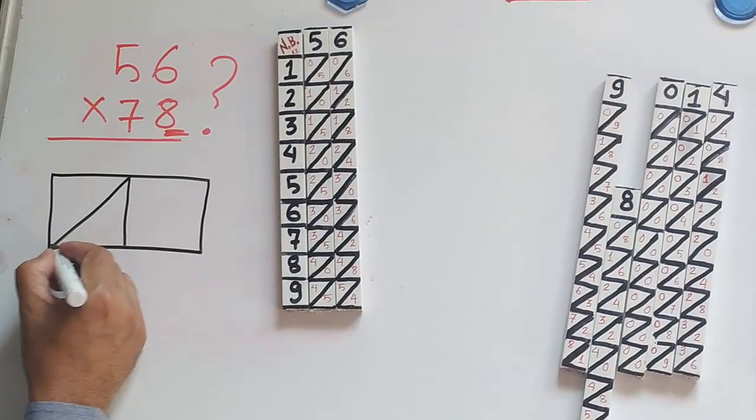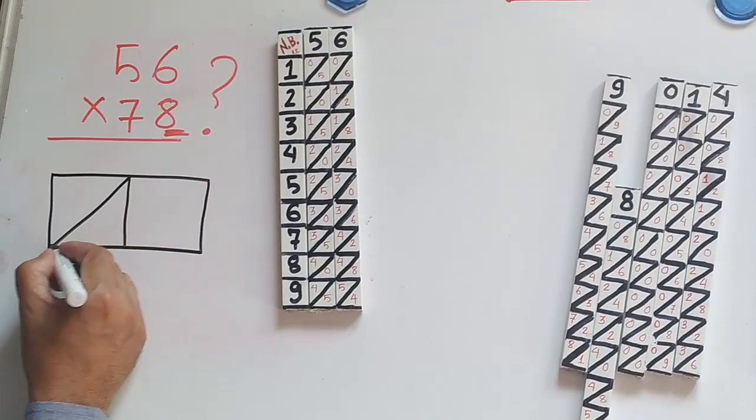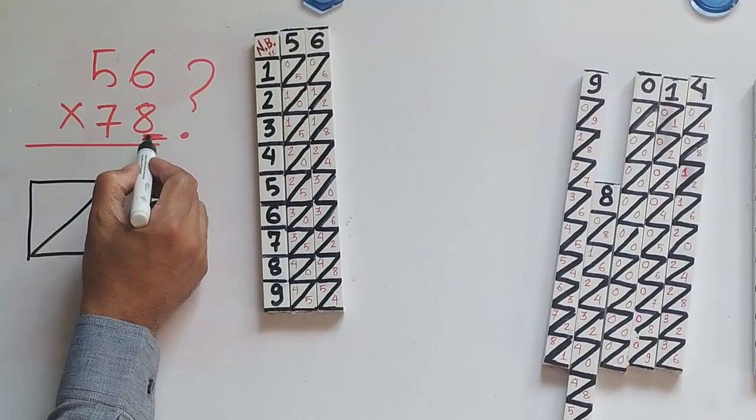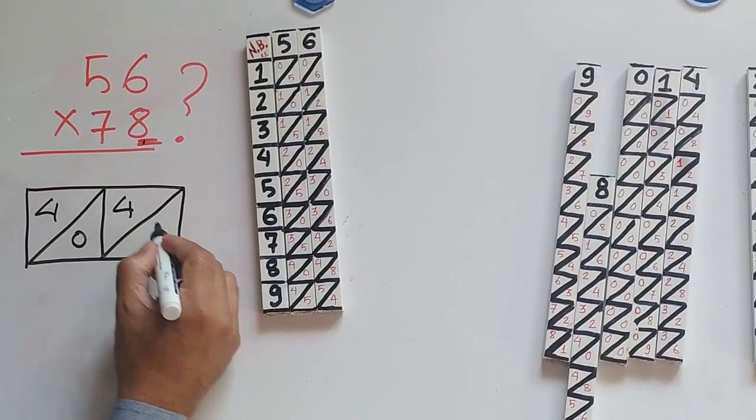So we are going to take the numbers of the row 8. The numbers from row 8 are 4, 0, 4, 8.